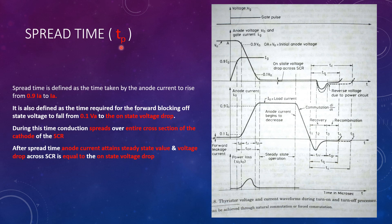Next we will see spread time. Spread time is defined as the time taken by the anode current to rise from 90% of its final value to its final value. As seen here, during spread time TP, the anode current rises from 90% of its final value to its final value. It can also be defined as the time required for the forward blocking voltage to fall from 10% of its initial value to the on state voltage drop. During TP, the forward blocking voltage falls from 10% of its initial value to the on state voltage drop across the SCR.